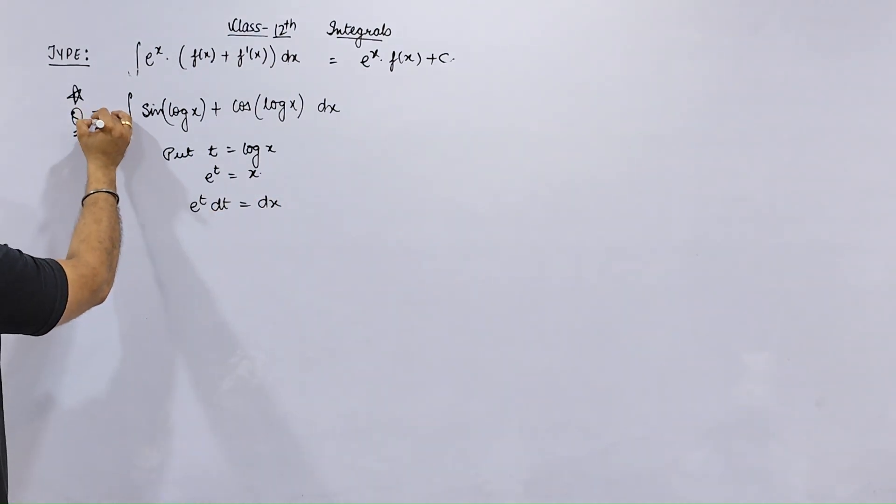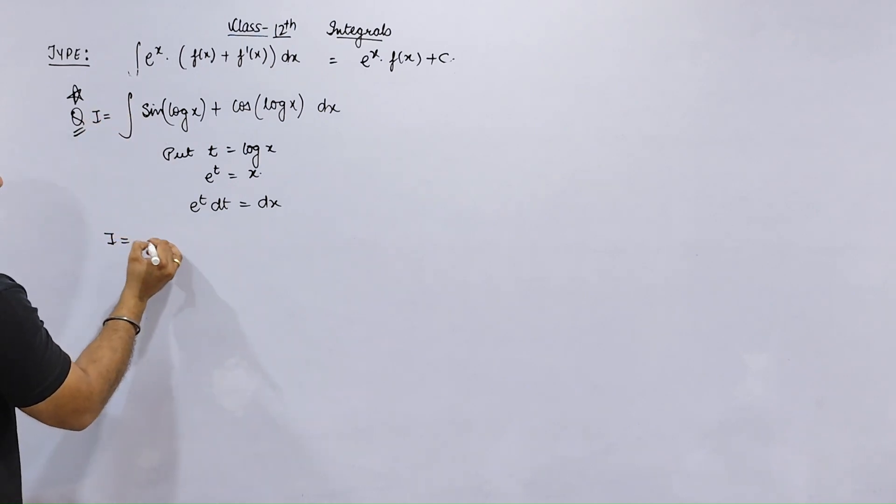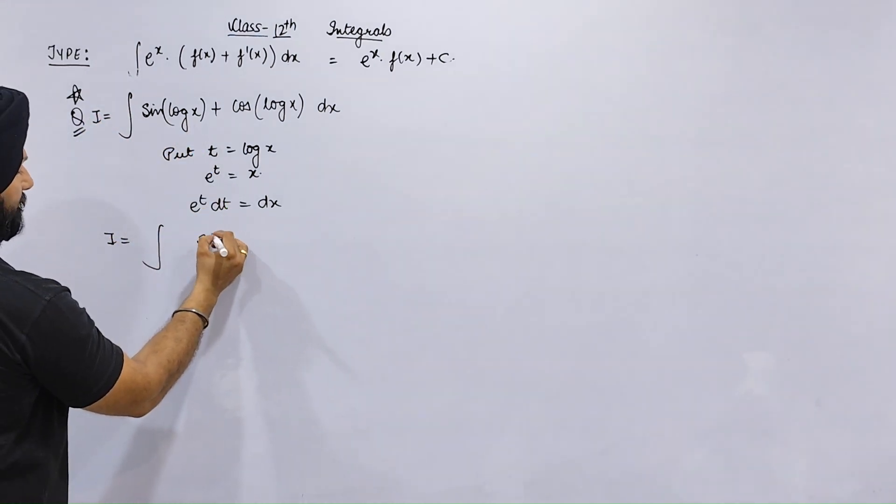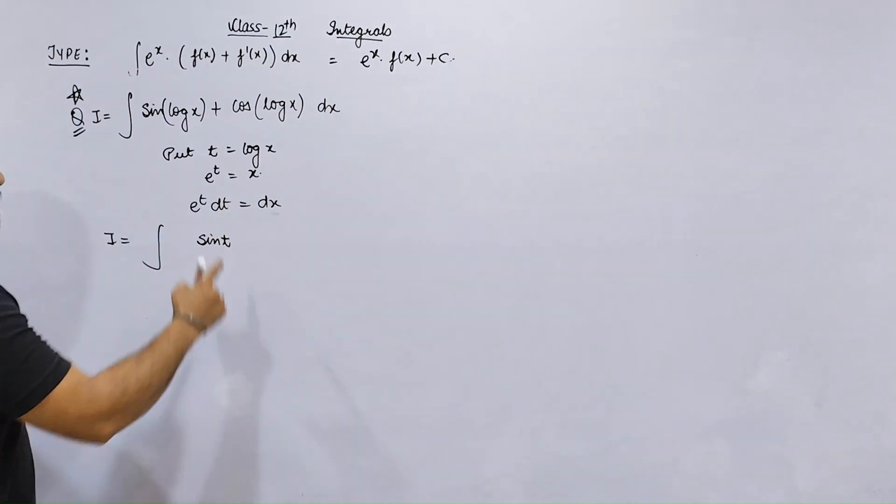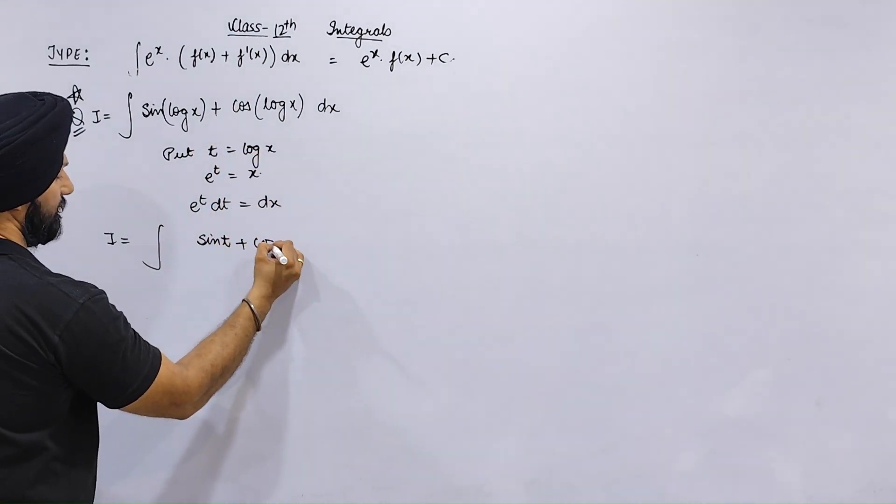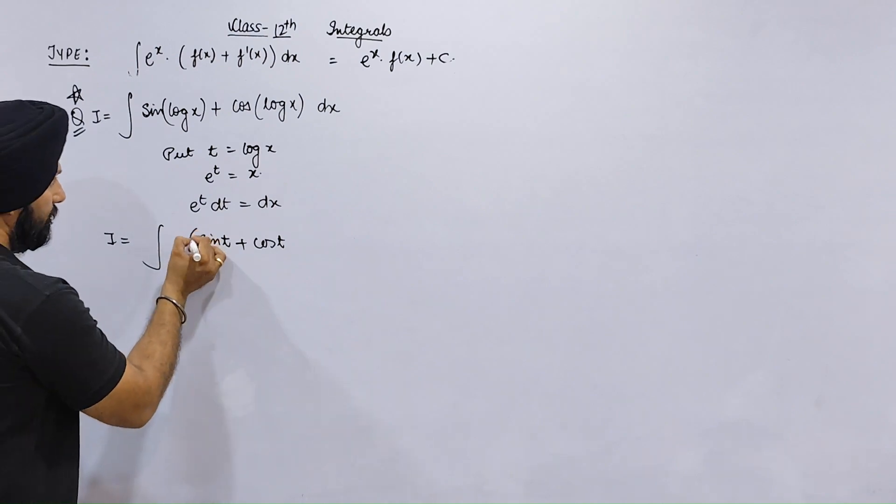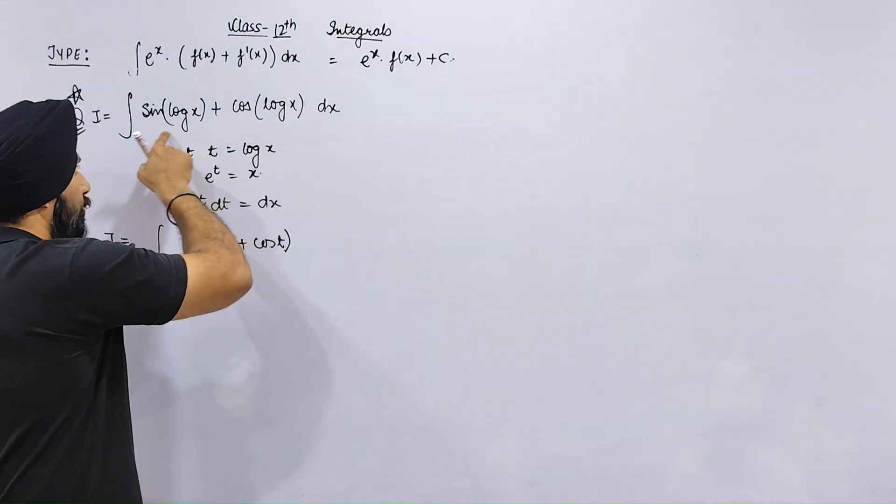So the integral of sin(log x) plus cos(log x) becomes sin(t) plus cos(t), times e to the t dt.